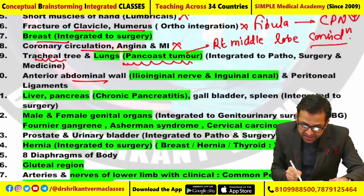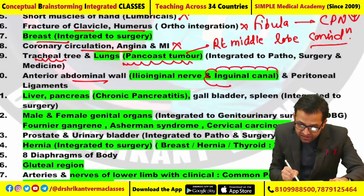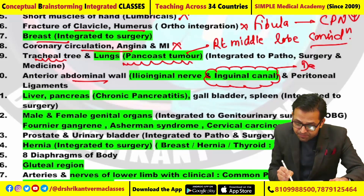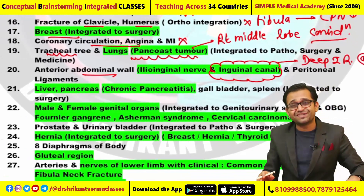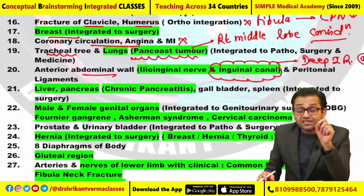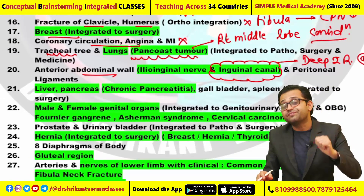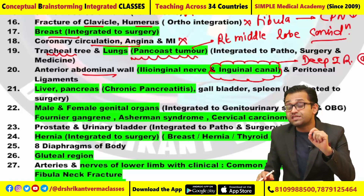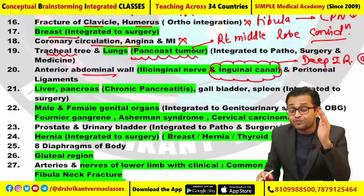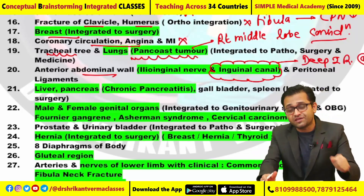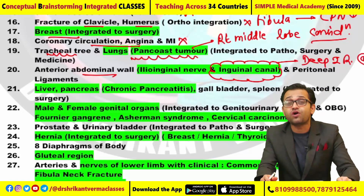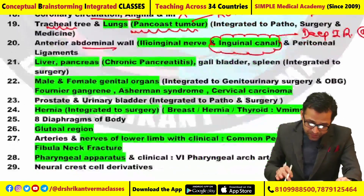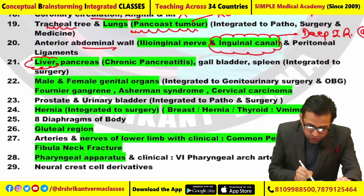The anterior abdominal wall — this time again the inguinal canal, specifically the deep inguinal ring, was asked. Students are saying the deep inguinal ring question had been asked. Remember, the deep inguinal ring is located in the fascia transversalis, while the superficial inguinal ring is located at our external oblique aponeurosis.